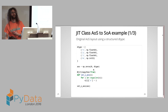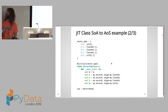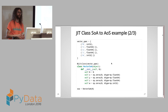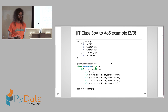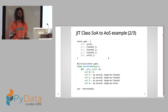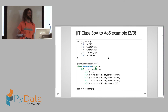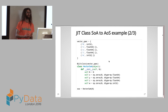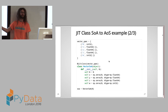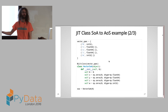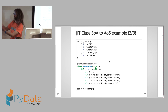To rewrite that as a struct-of-arrays using a JIT class: first, produce a specification that tells Numba the names and types of the class members. Use the jitclass decorator and pass it the specification. Write the class as a normal Python class — here I've only included a constructor, but you can have other methods. One instance of the JIT class holds arrays of x's, arrays of y's, arrays of z's — this is the structs-of-arrays layout.